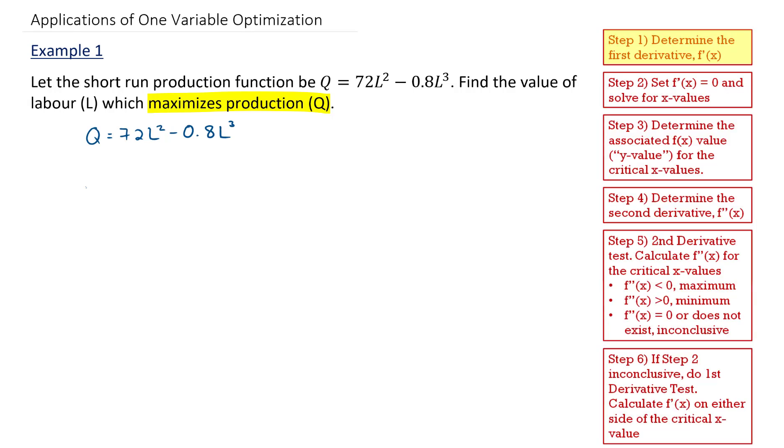Step one, I'm going to determine the first derivative of our function. Q prime is equal to, now the first derivative of 72L squared is 144L, and the derivative of 0.8L cubed becomes 2.4L squared.